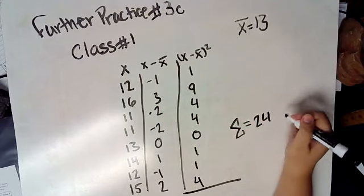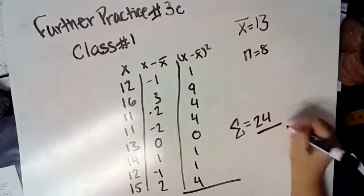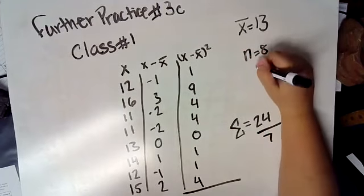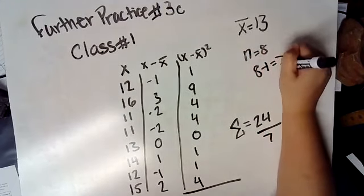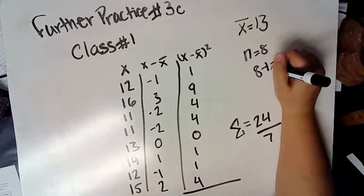We then have to divide it by n minus 1. Our n equals 8, so we are going to be dividing by 7, because 8 minus 1 equals 7. And that gives us... give me one second.